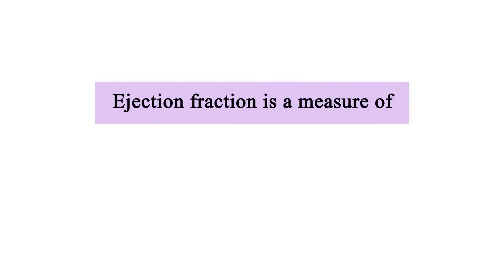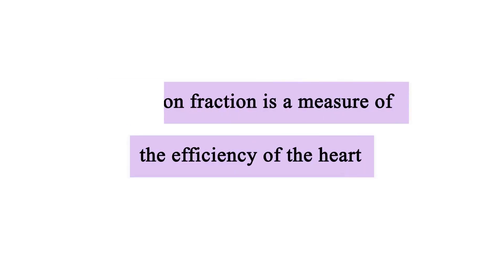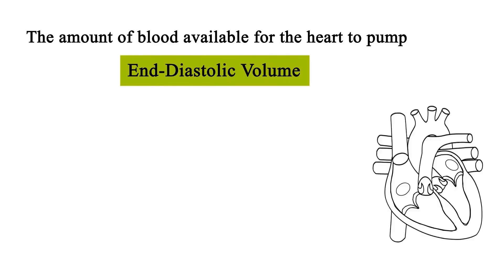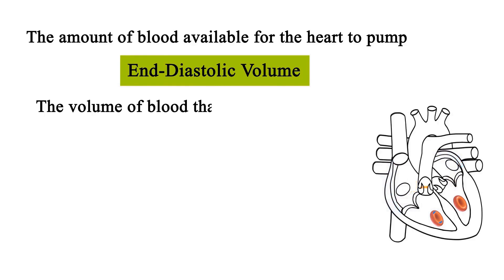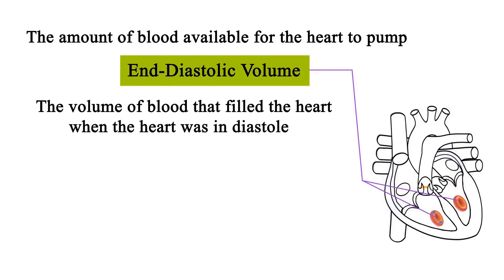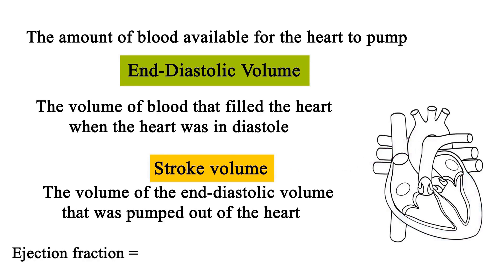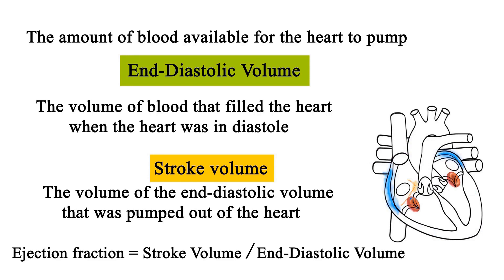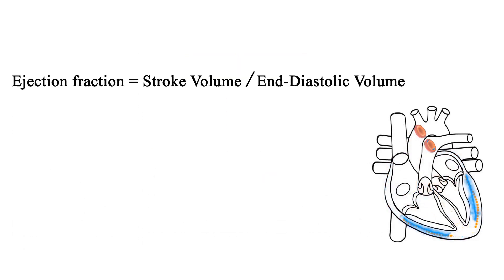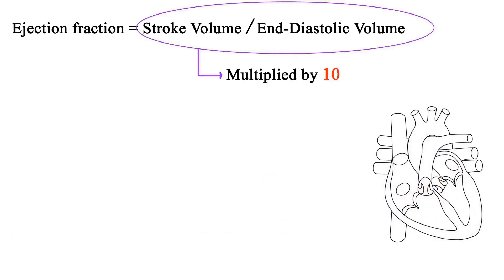Ejection fraction is a measure of the efficiency of the heart. The amount of blood available for the heart to pump is the end diastolic volume — the volume of blood that filled the heart when the heart was in diastole, the resting state of the heart. Stroke volume is the volume of the end diastolic volume that was pumped out of the heart. Ejection fraction can be represented by the formula: ejection fraction equals stroke volume divided by end diastolic volume.